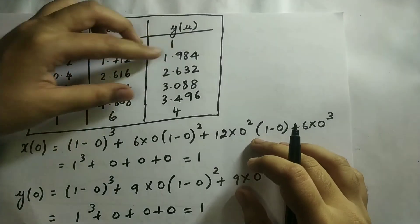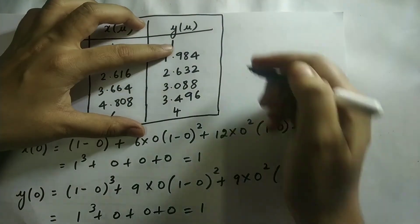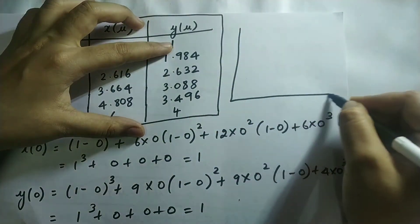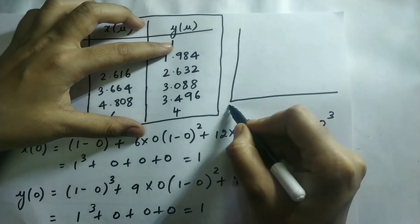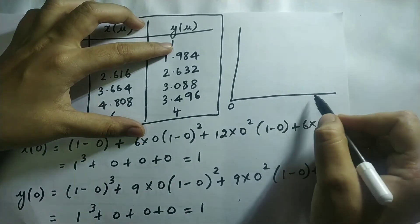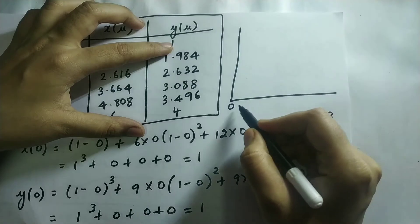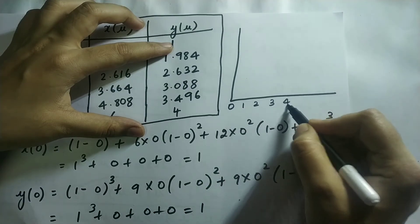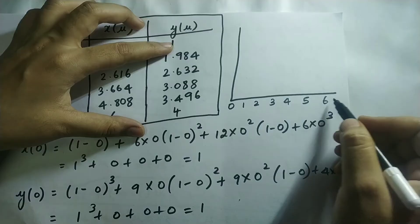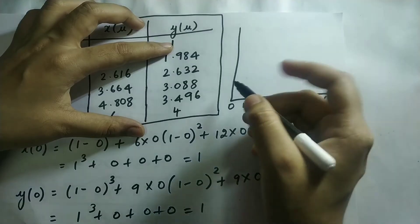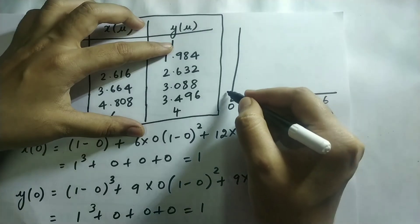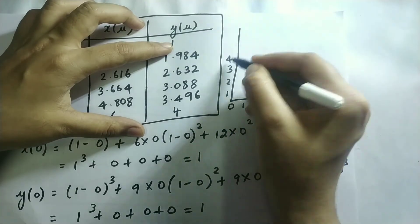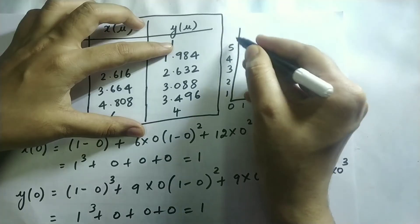Now let us draw the graph. On the x-axis we have values 0, 1, 2, 3, 4, 5, and 6. On the y-axis we also have values 0, 1, 2, 3, 4, 5, and 6.